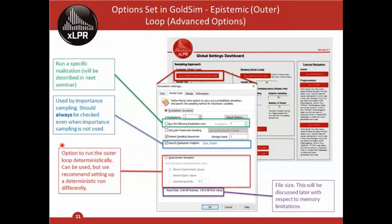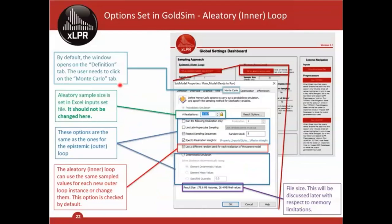For the same reason, GoldSim includes a built-in deterministic simulation option, but we recommend unchecking that box — XLPR has its own deterministic approach described in the next training that is easier to use. So: the 'realization weight' box should always be checked; the GoldSim deterministic simulation box should always be unchecked. At the bottom you'll see information about the sample size related to memory management. Now let's look at the aleatory uncertainty button — the inner loop.